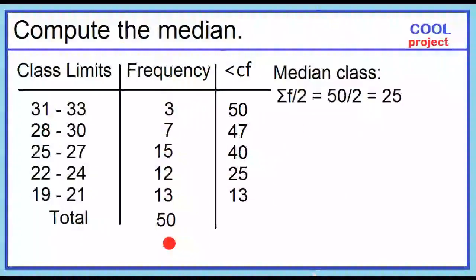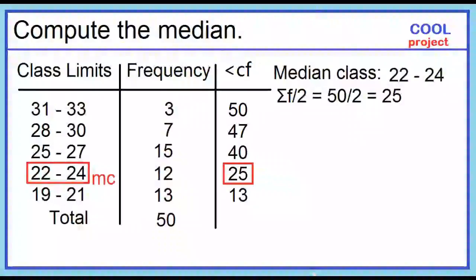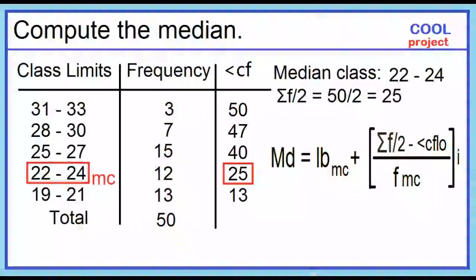One-half of the total frequency is 25. In the less-than-cumulative frequency column, the values greater than or equal to 25 are 25, 40, 47, and 50. The smallest value is 25, so our median class is 22 to 24. The median equals the lower boundary of the median class plus the quantity (one-half of the total frequency minus the cumulative frequency of the class below the median class), all over the frequency of the median class, times the class width.